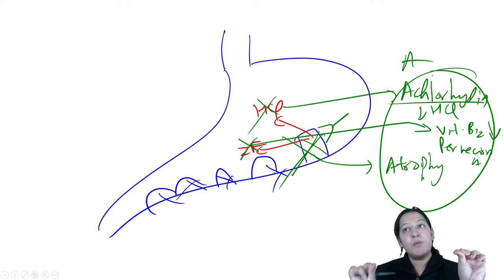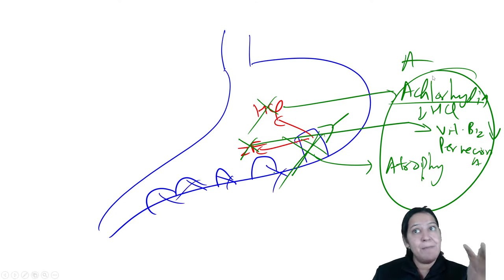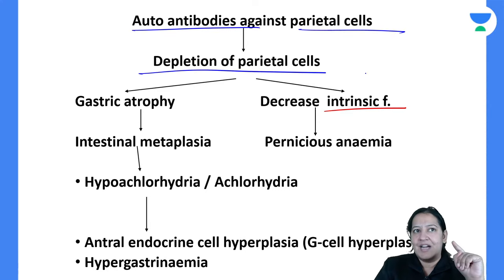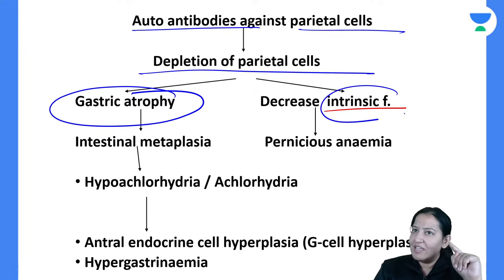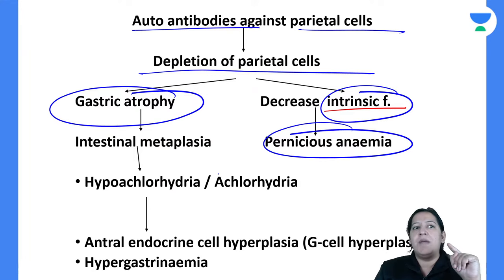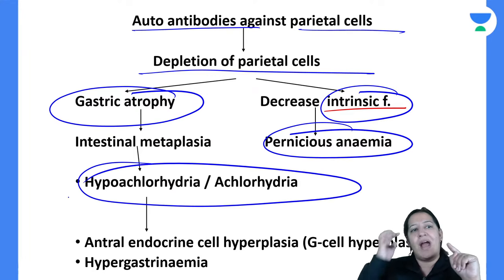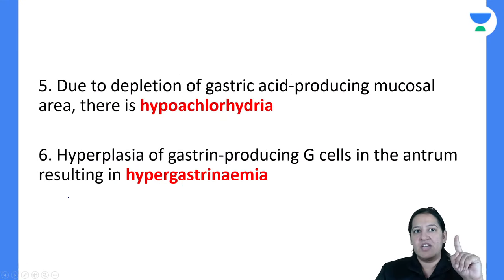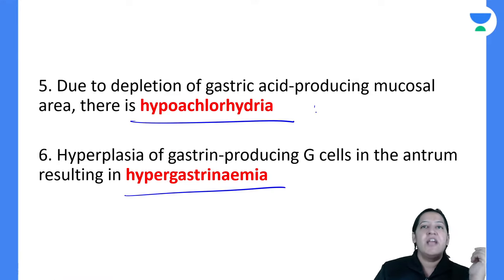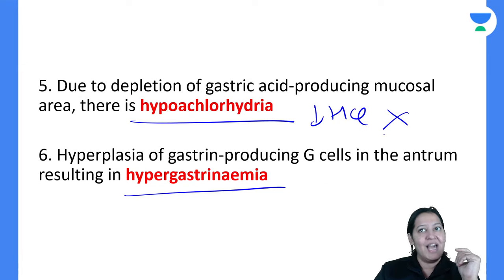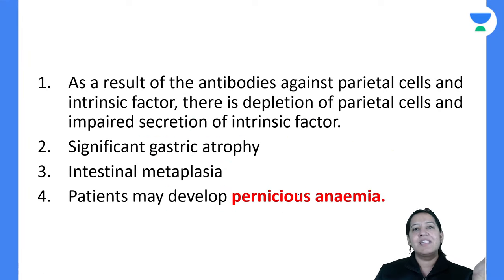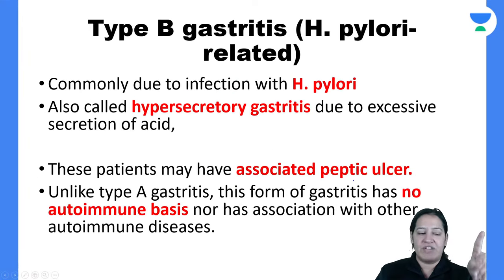Since HCL is less in Type A, by feedback mechanism gastrin will be more in the blood — hypergastrinemia. So the features of Type A are: gastric atrophy, achlorhydria/hypochlorhydria, pernicious anemia, and hypergastrinemia. Autoantibodies are formed against parietal cells.